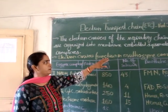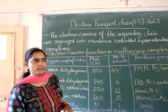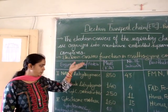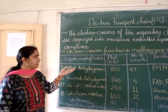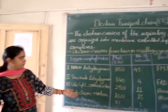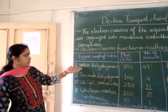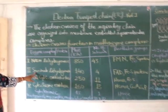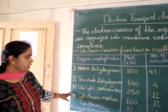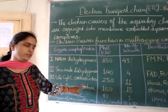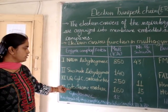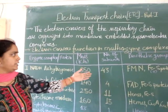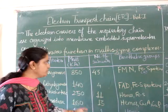Electron carriers always function in multi-enzyme complexes. All the universal electron carriers are complexed into these multi-enzyme complexes, and there are four enzyme complexes: Complex I, also known as NADH dehydrogenase complex; Complex II, succinate dehydrogenase complex; Complex III, ubiquinol to cytochrome C oxidoreductase; and Complex IV, cytochrome oxidase complex. These complexes differ in molecular mass and number of polypeptide subunits.